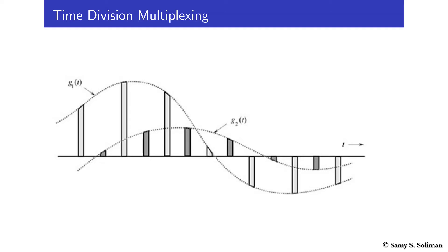Also Pulse Code Modulation. The reason TDM is suitable for discretization-based modulation types is that when we discretize a signal, we get only discrete samples of the signal, whether those samples are instantaneous samples or pulses. For example, for signal g1(t), when we apply Pulse Amplitude Modulation, the signal exists during certain times, but within other time durations there are no parts or samples of signal g1 being transmitted, which makes it suitable.